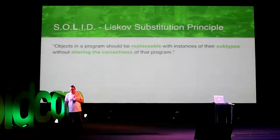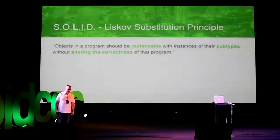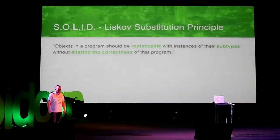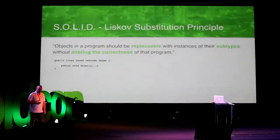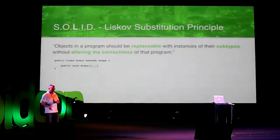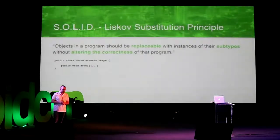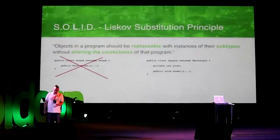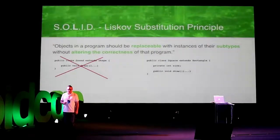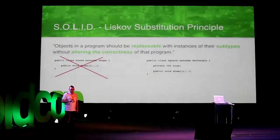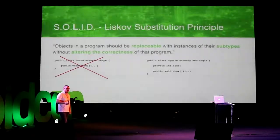The Liskov Substitution Principle — when I talk to people about this one, everyone says that is obvious: if you have something and you extend it, of course it shouldn't change the behavior of the program. But I have seen things like having a 'Sound' class that extends shapes. That means when my rendering engine renders that class, a sound is played, which alters the correctness of the program. If instead I have a square that extends rectangle, that doesn't change the correctness. So exchanging any class with anything that is still a shape should not alter the correctness of the program.